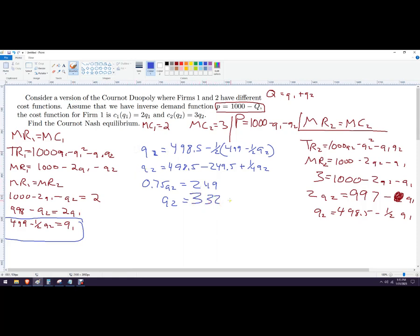That's long. A lot longer than a monopoly problem. So 332 is the number of units that firm 2 will produce. Now for firm 1, we're just going to plug in that number into our best response function. So it's 499 minus 0.5, 332. And we do all that together and we get 333.